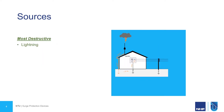So where do these surges come from? Well, the most obvious and certainly the most destructive is lightning. In this case, the building is protected by a lightning rod that conducts the lightning energy down to earth. The problem that causes is that it raises the local potential of the earth above the system voltage, and hence a surge actually enters via the earth and causes damage.